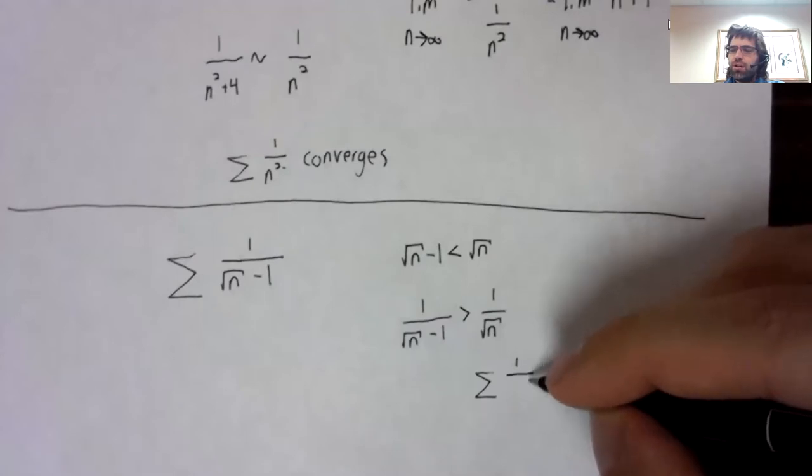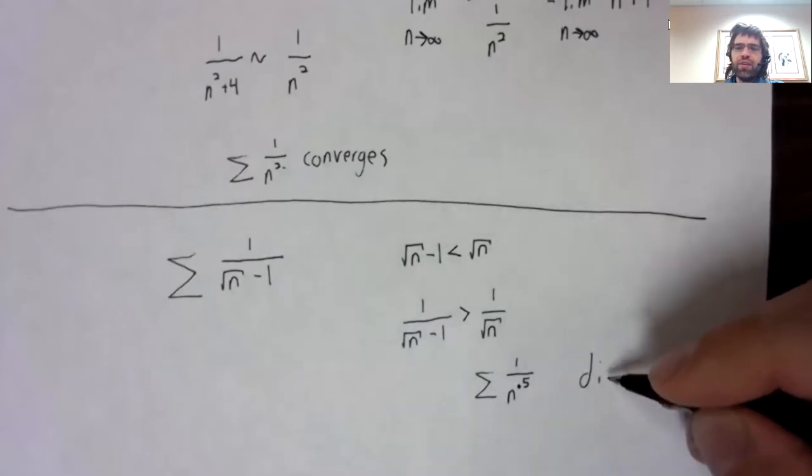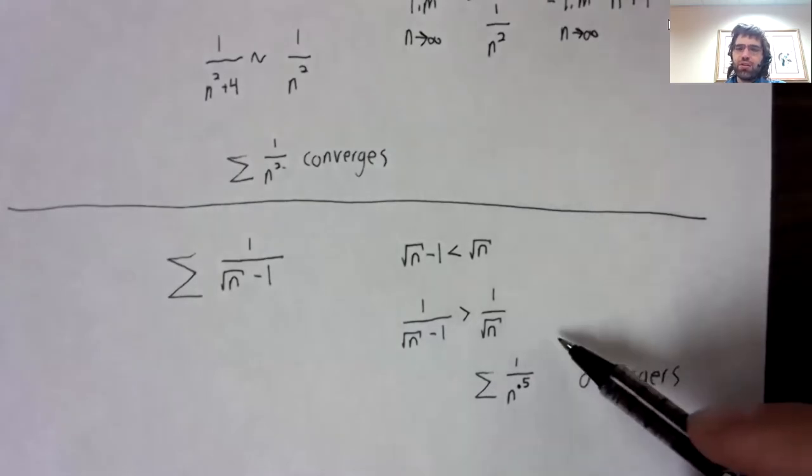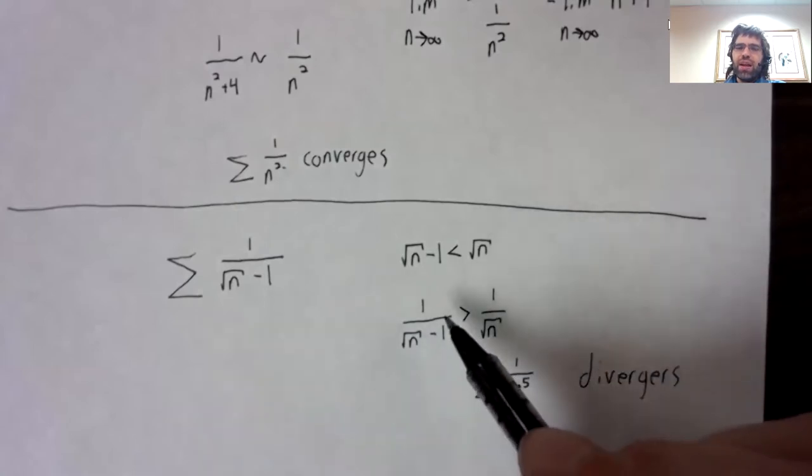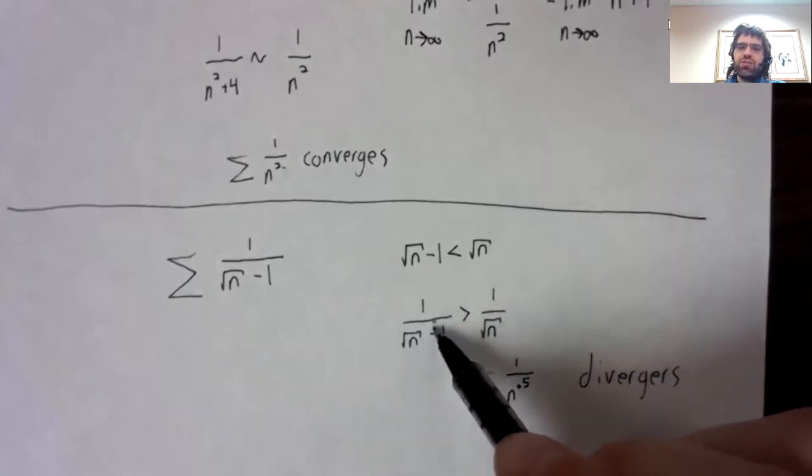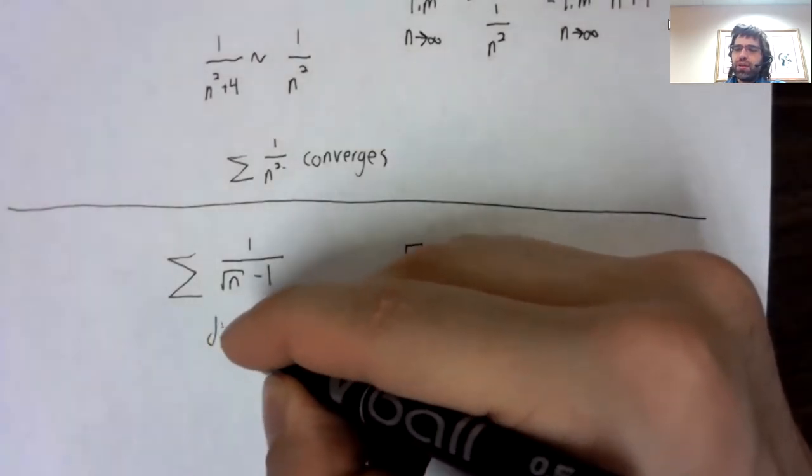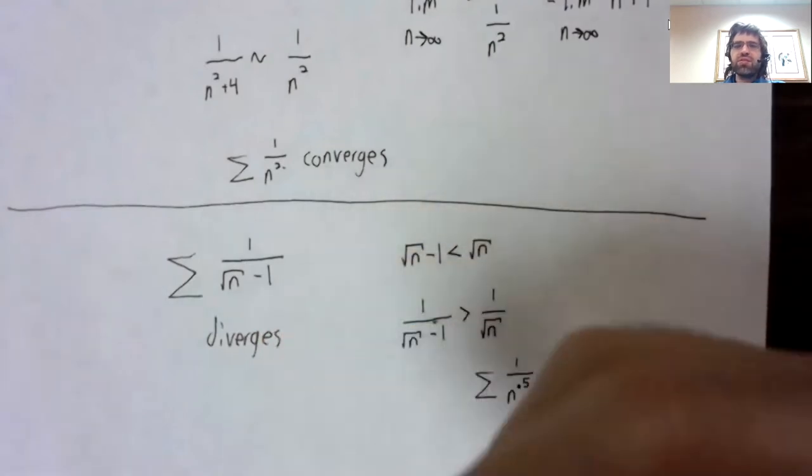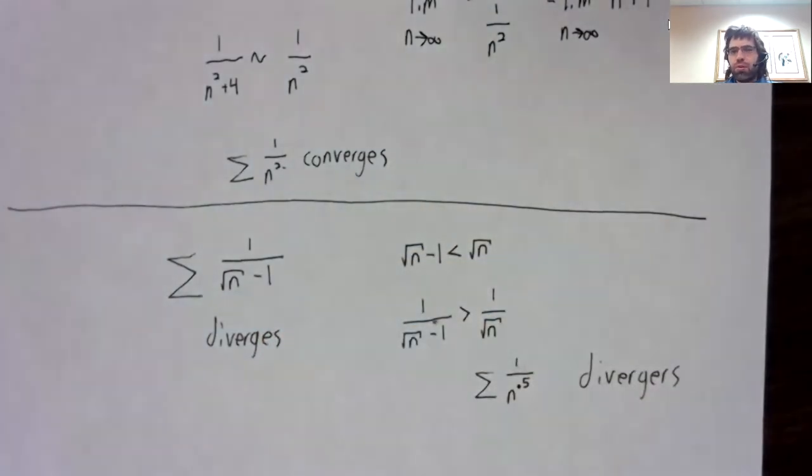One over n to the 0.5 is a divergent p series. And being larger than a divergent series makes this diverge.